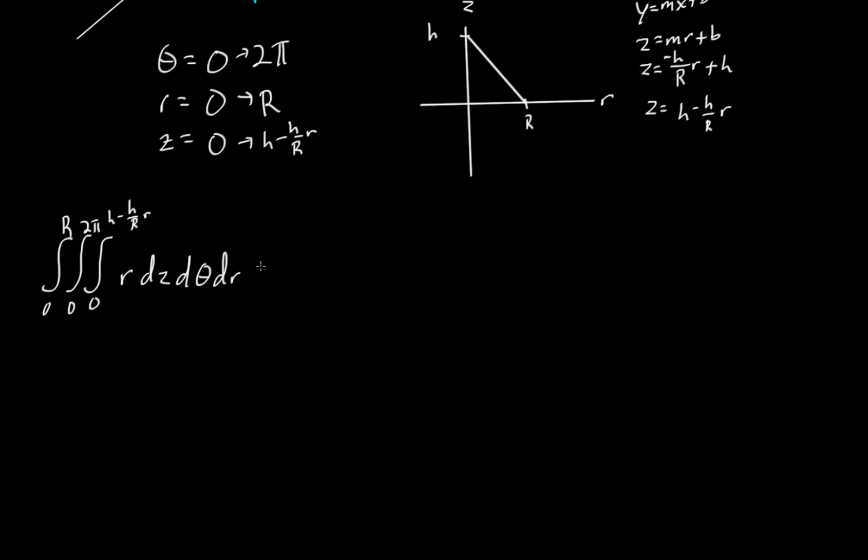So we'll take this and evaluate it with respect to z, our first interval. We're simply going to get the integral from 0 to capital R, integral from 0 to 2 pi, of h minus h over capital R times r, evaluated from 0 to h minus h over capital R times r, times r d theta dr. Like I said, z is going from 0 to h minus h over capital R times r. We don't have a z in our function, therefore it becomes a constant and we do not have to evaluate this section.